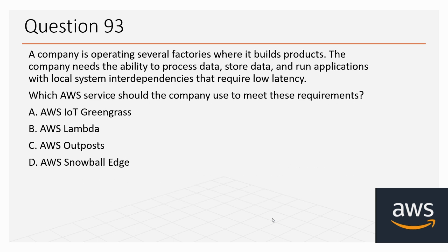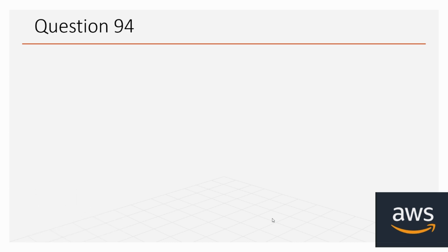Question number 93: A company is operating several factories where it builds products. The company needs the ability to process data, store data, and run applications with local system interdependencies that require low latency. Which AWS service should the company use to meet these requirements? Options: A. AWS IoT Greengrass, B. AWS Lambda, C. AWS Outposts, D. AWS Snowball Edge. The correct option is C, AWS Outposts.